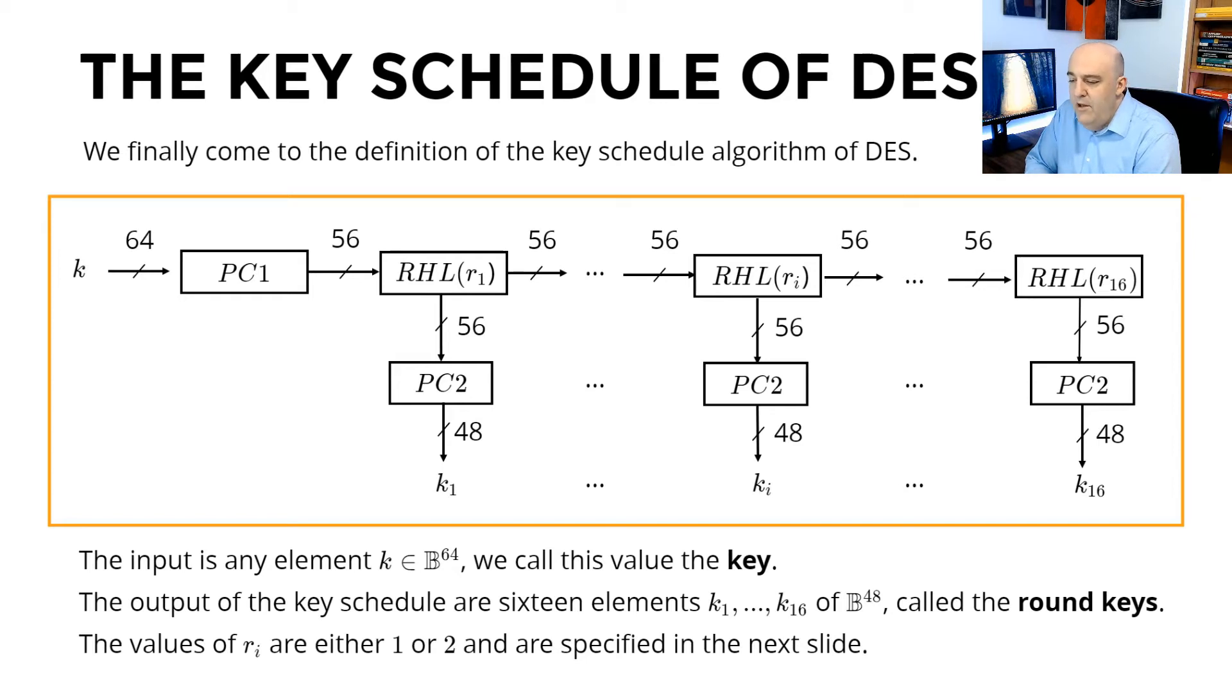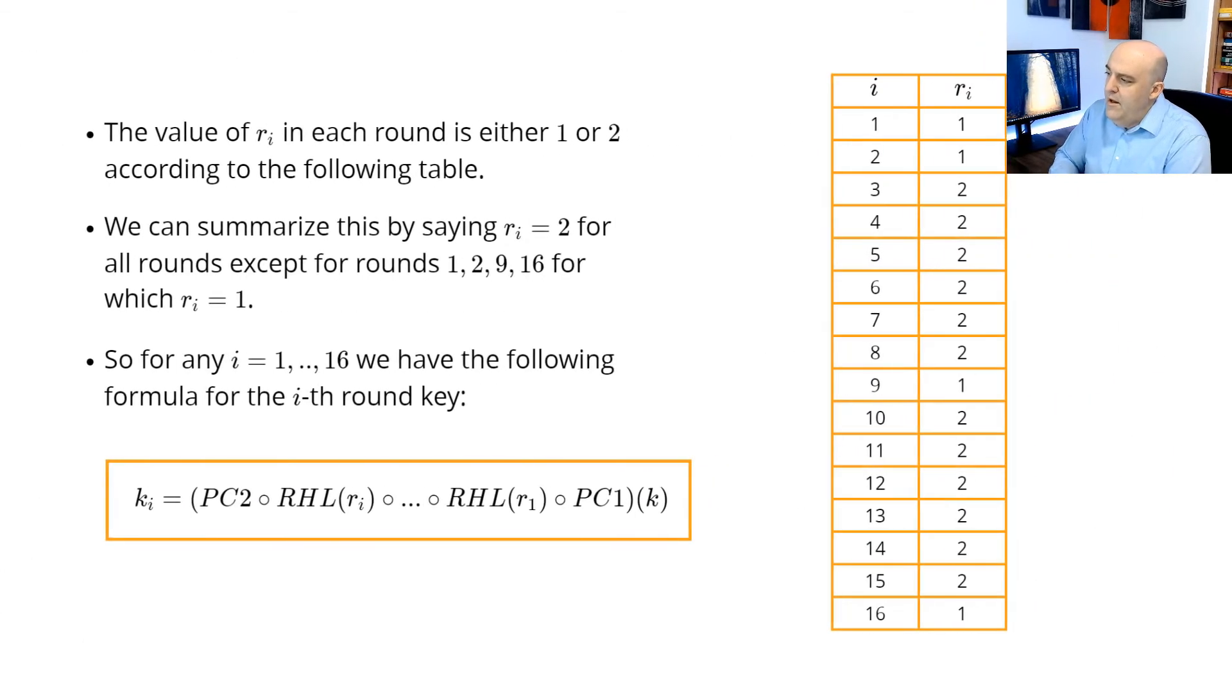And these P-boxes RHL of r_i, r_i is either 1 or 2 for every single round. And here are the values of r_i given in this table. Notice they're always equal to 1 or 2. And really, we could summarize just by saying r_i is equal to 2 for all the rounds, except for the four rounds, round 1, 2, 9, and 16, in which case r_i is equal to 1 for those rounds.